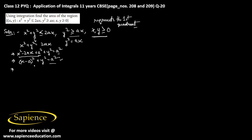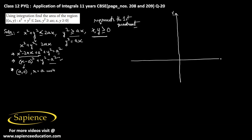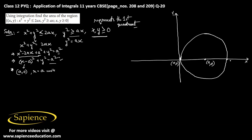Now we can draw the circle. This circle has center at (a, 0) and radius equal to a units. Drawing it: this is the y-axis and this is the x-axis. The circle passes through the origin, with center at (a, 0), so the origin is at one end and the point 2a comma 0 is at the other end.